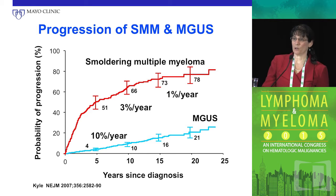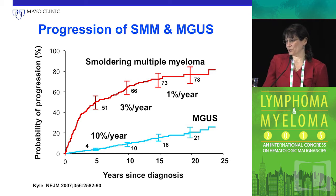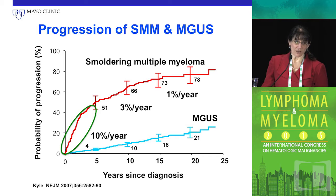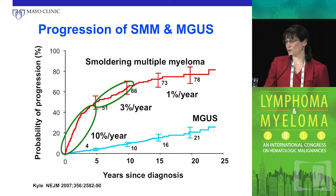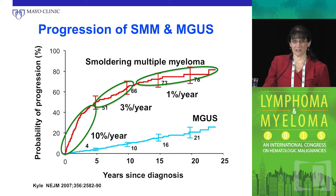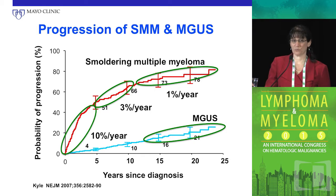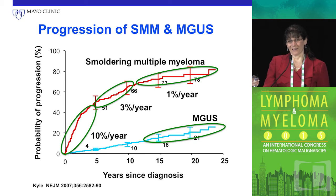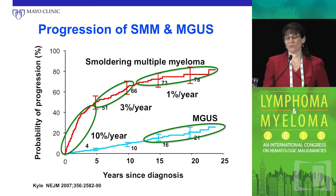Smoldering myeloma is a very heterogeneous entity. This curve shows that in the first five years, the rate of progression is about ten percent per year. However, in the next five years, the rate drops to only three percent per year, and further on it slows to be akin to MGUS. So smoldering myeloma is really a placeholder for a group of patients we don't understand very well.